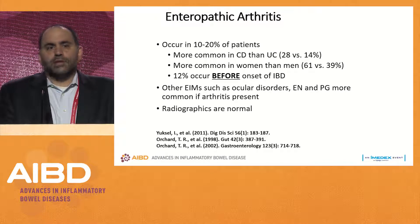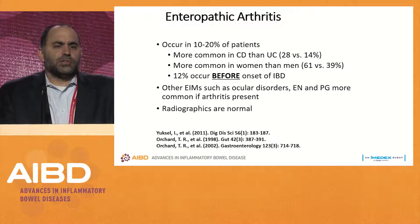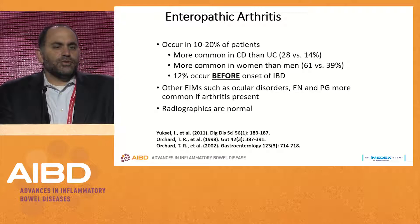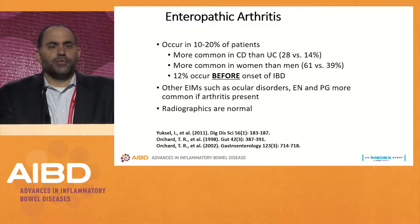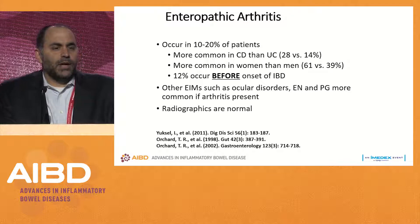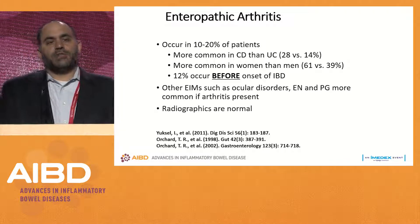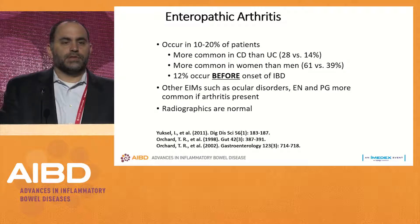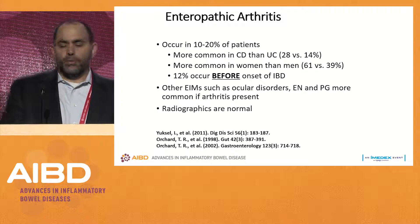Actual arthritis occurs in about 10% to 20% of patients with IBD, more common in Crohn's than ulcerative colitis, and more common in women than men. Interestingly, inflammatory arthritis before diagnosis occurs in about 12% of patients. Other extra-intestinal manifestations such as ocular disorders, erythema nodosum, and pyoderma are more common when inflammatory arthritis is present. Typically, radiographs are normal — these are non-destructive arthritides.